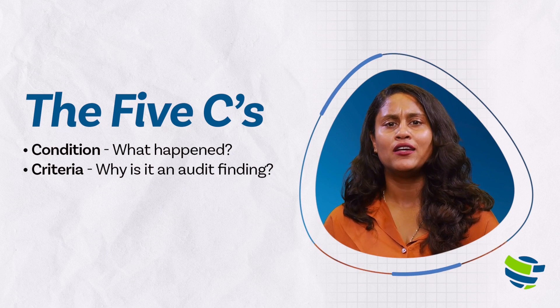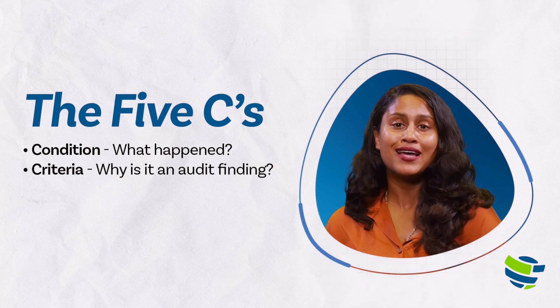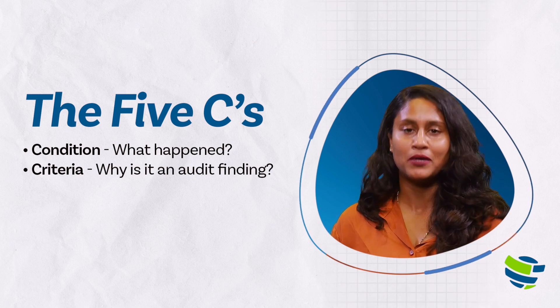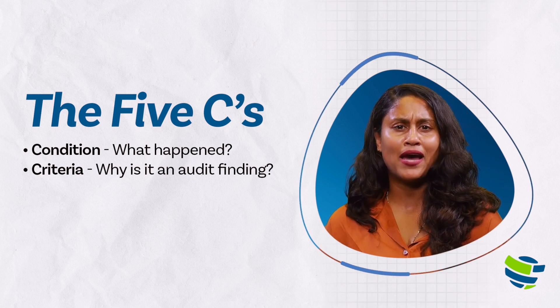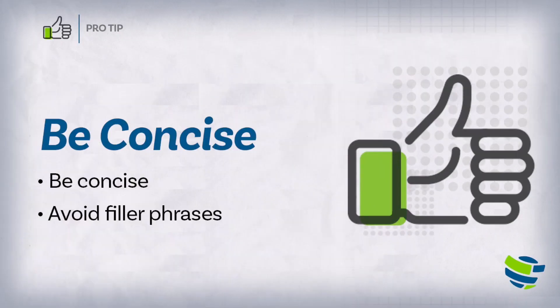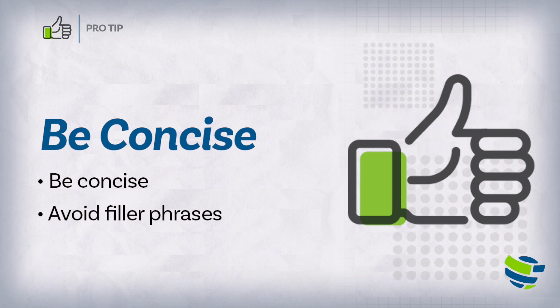The second C, criteria, will tell us why this is a finding. For example, the why could be that it is a part of company policy that all system changes must be approved. This could be tied back to a larger framework the company has agreed to follow. Be concise with these statements — get to the point and avoid filler phrases like 'during our review, internal audit noted that...'